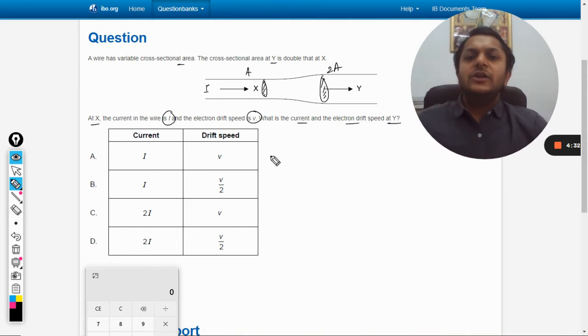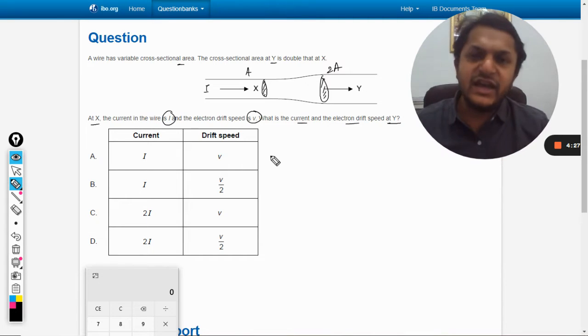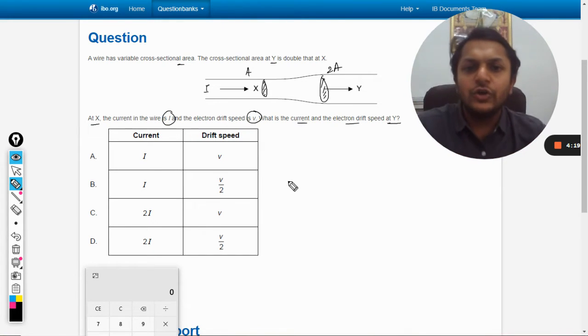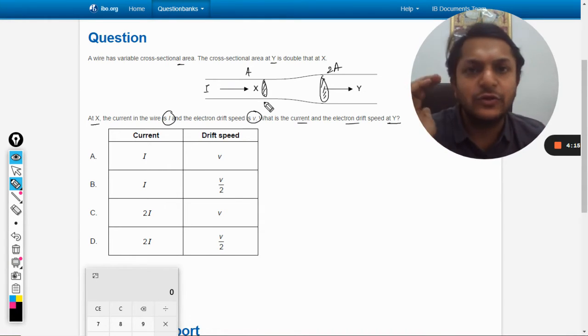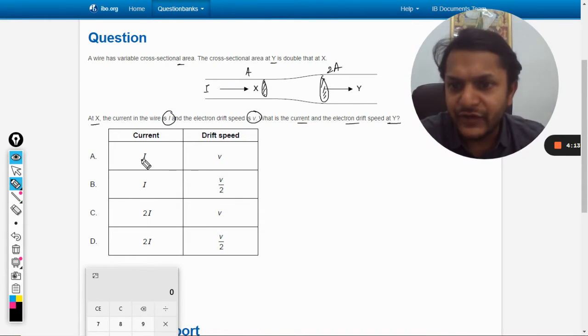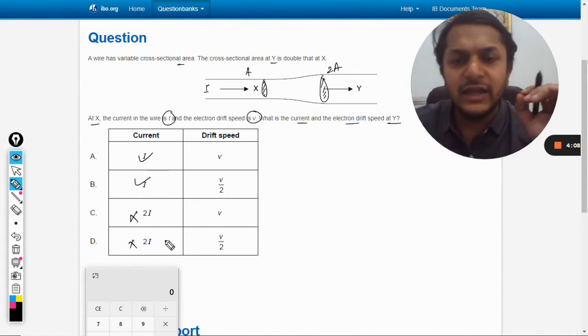First of all, these two wires can be treated as two separate wires in series. They are two different resistances. When they are placed in series, the current passing through both of them will have to be the same. So if the current passing through x is i, then the current passing through y will also be i. So these two options are wrong, and our answer is in A and B.